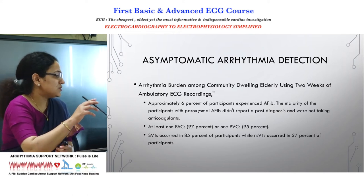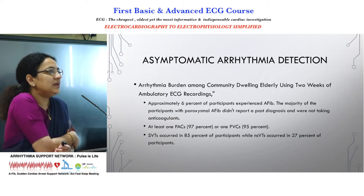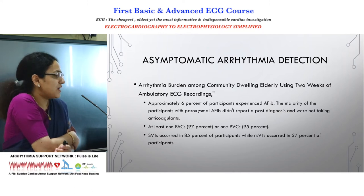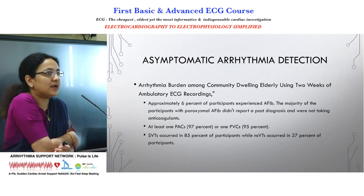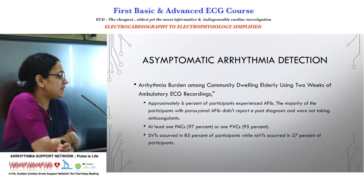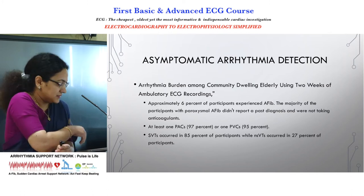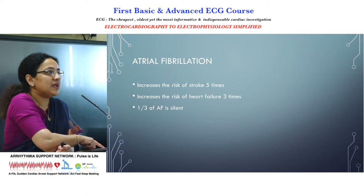There was a small study on the asymptomatic arrhythmia burden in our society, done in the elderly population. They found that in patients more than 65 years of age, 6% had atrial fibrillation which was asymptomatic. 97% had some premature atrial or ventricular complexes. SVPCs were occurring in 85% of participants, while NSVTs had 27%. All these were asymptomatic.